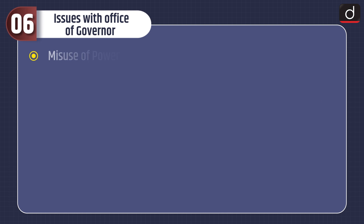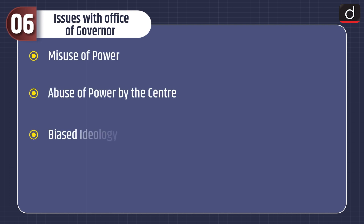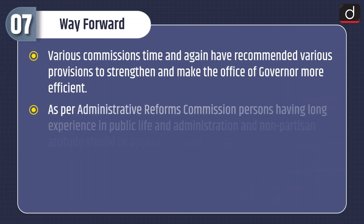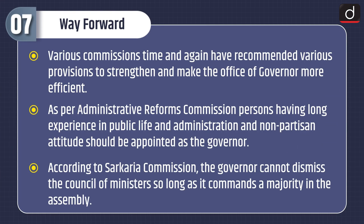Now, let's have a look at the issues with the office of governor. Key issues include misuse of power, abuse of power by the centre, biased ideology and acting as a puppet ruler. Various commissions have time and again recommended various provisions to strengthen and make the office of governor more efficient.